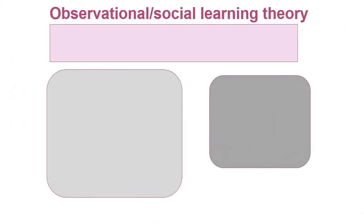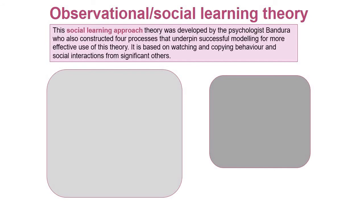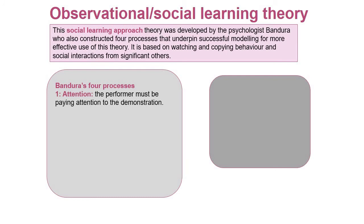The final theory - just to go in addition to the work we've already done - is observational or social learning theory, which is the one we've spoken about most in different areas around personality, aggression, and lots of different topic areas throughout the course. This social learning theory was developed by Bandura, who also constructed four processes that underpin successful modelling for more effective use of this theory. It's based on watching and copying behaviour and social interactions from significant others.